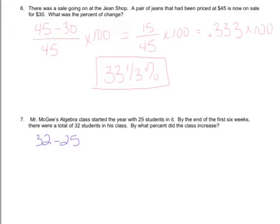So the difference between the old and the new divided by the old, the old number of students was 25, not 32. That's the old number. Then I have to multiply by 100. So 32 minus 25 is going to be 7. So I end up with 7 over 25 times 100.